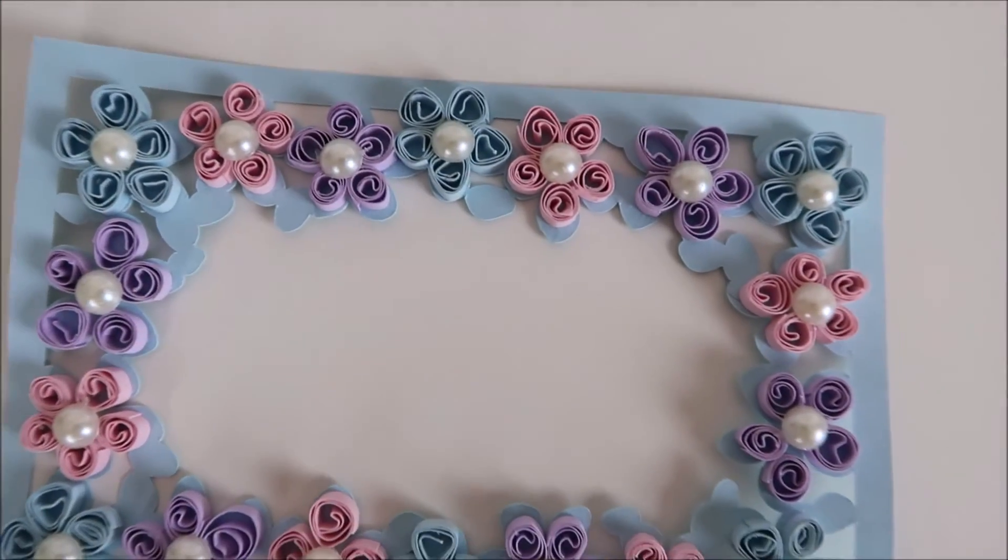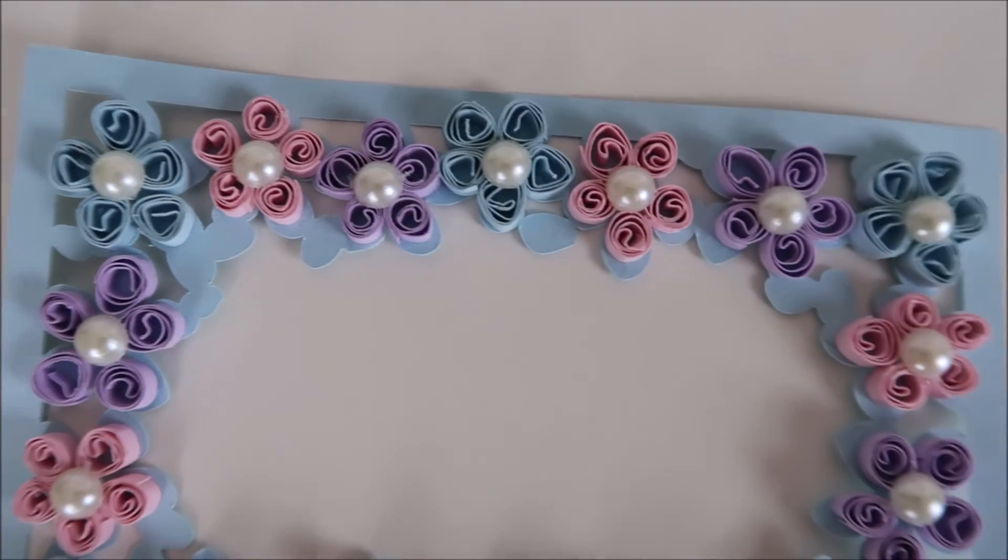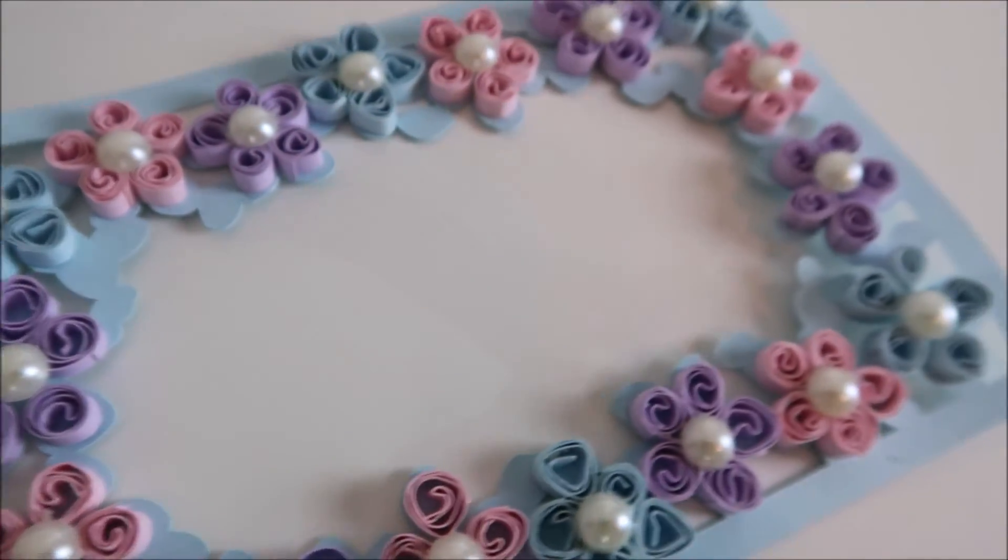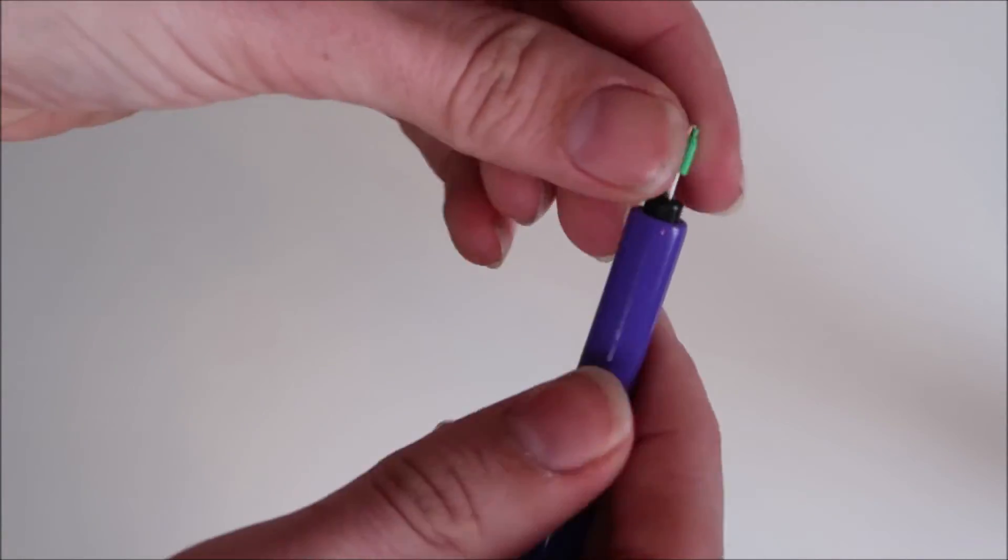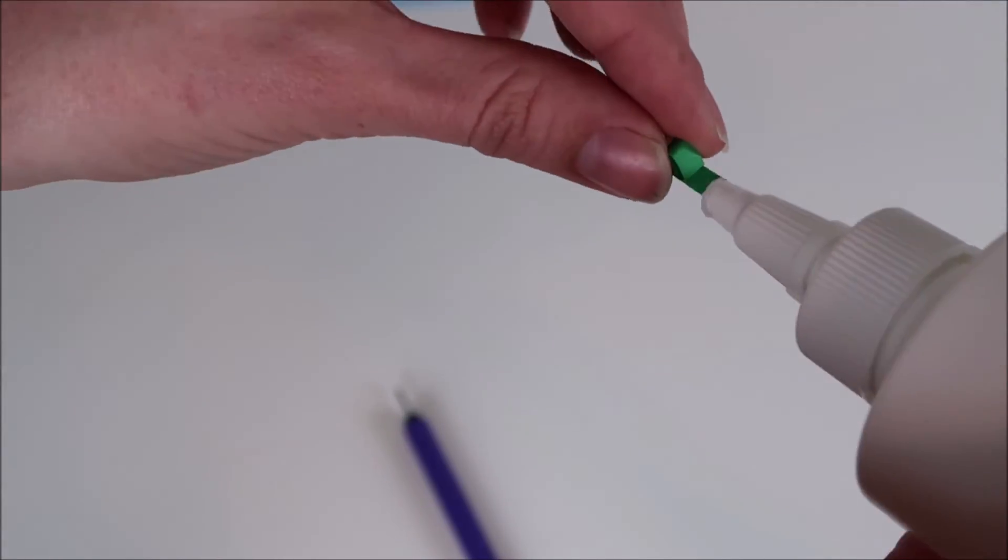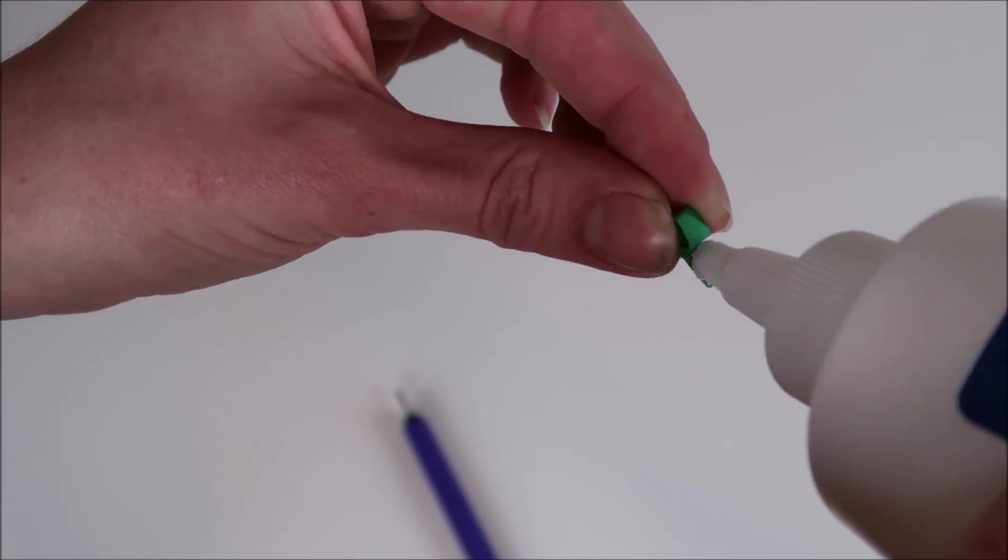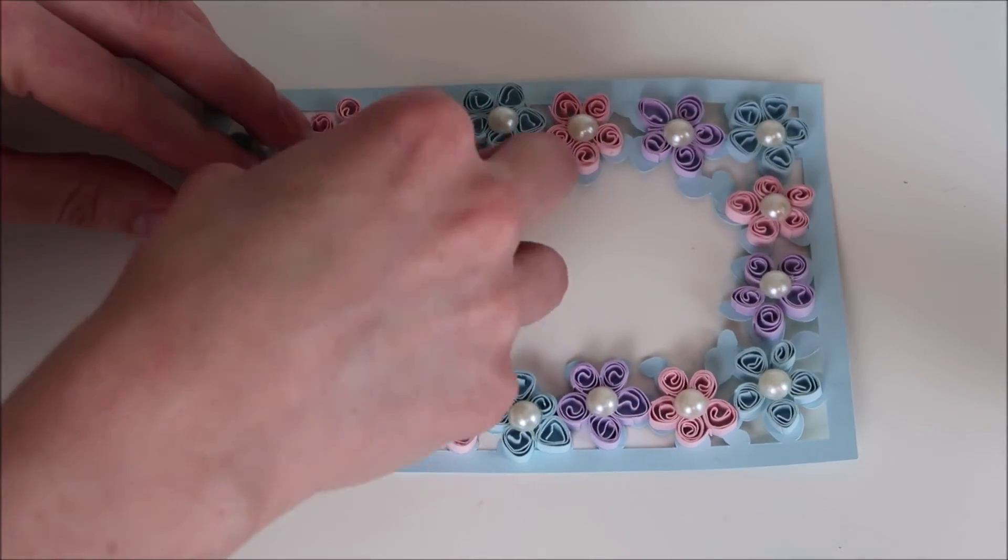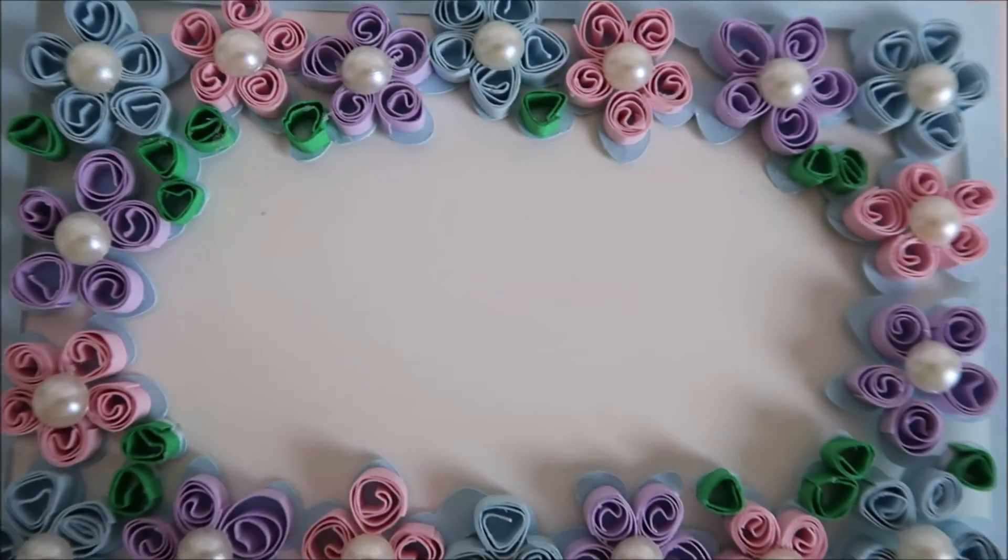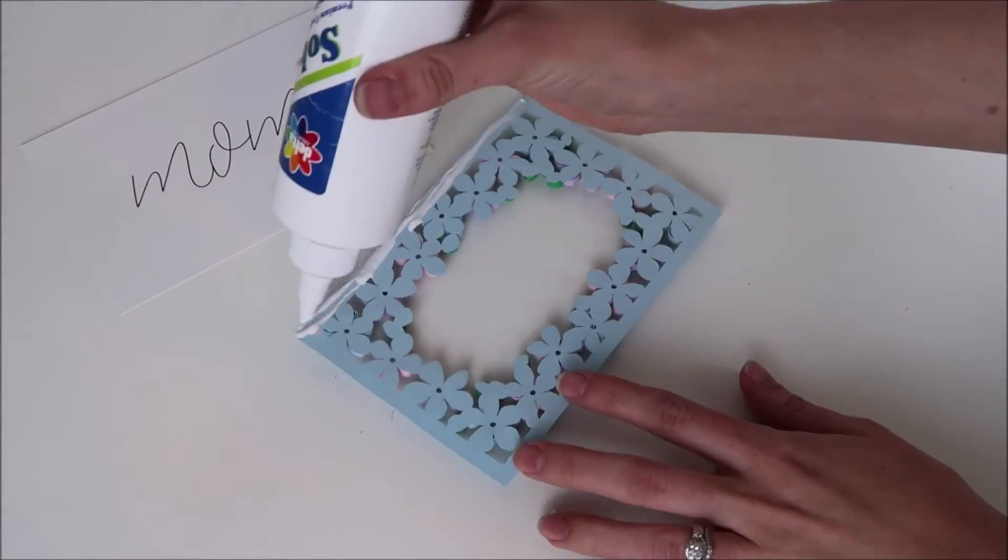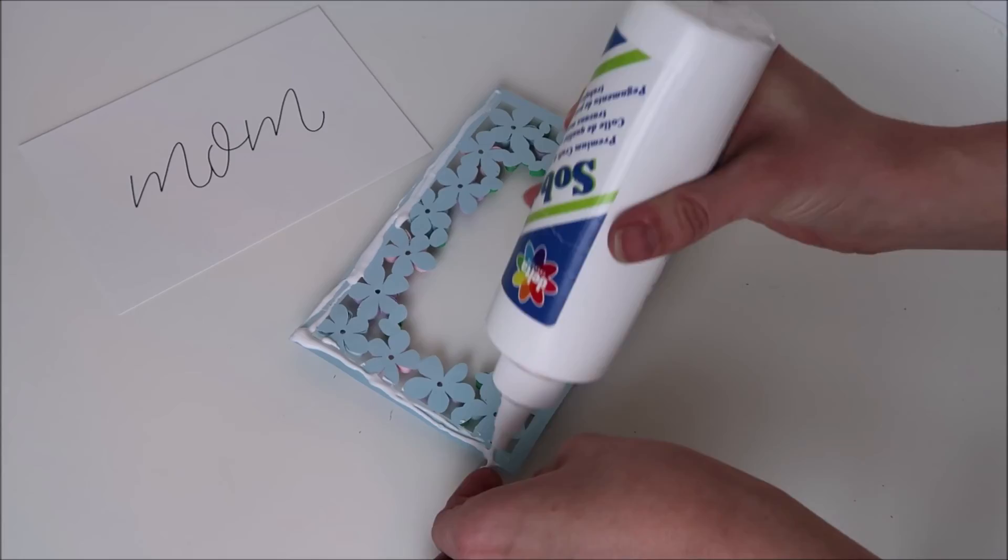Here I have the rest of the flower petals rolled and glued onto the cardstock along with the pearl embellishments. Next I use my quilling tool for the green leaves and glued those onto the cardstock as well. Then I turn the blue cardstock over and glue it on the edges and then place it over the white piece.